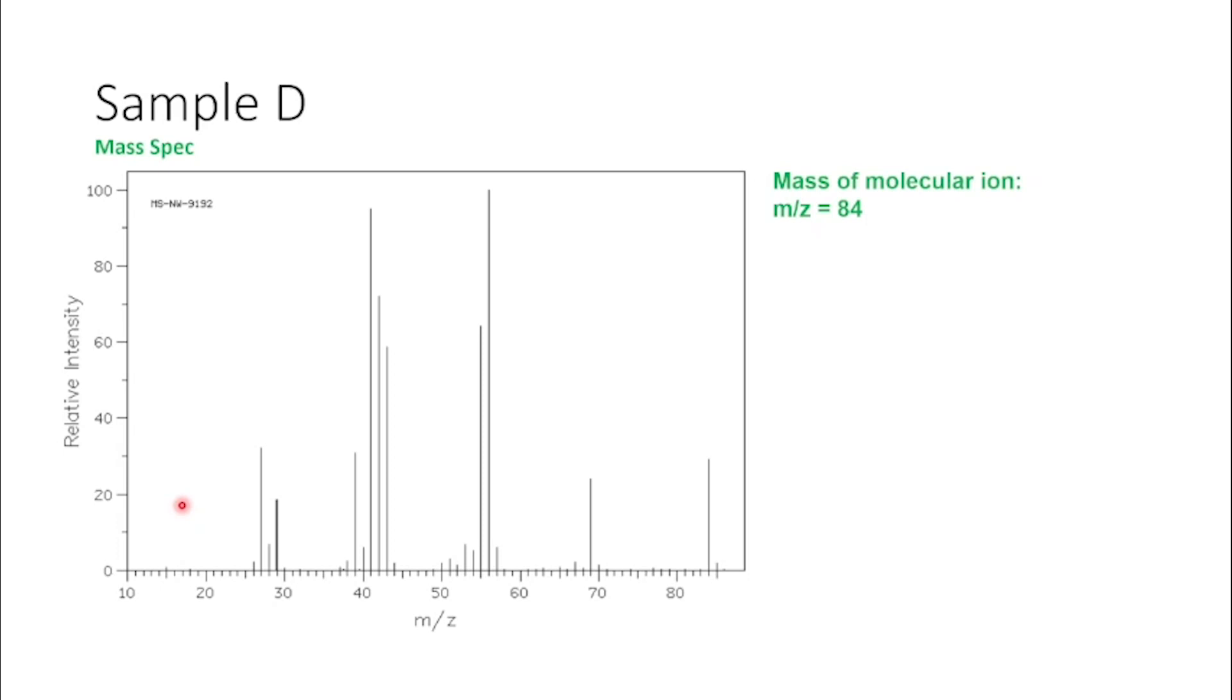Then I have a look at the mass spec. And the first thing I look at the mass spec is the peak that is furthest down the end of the spectrum. Because this will tell me the mass of my molecule. Give or take a hydrogen, probably. And this is 84.